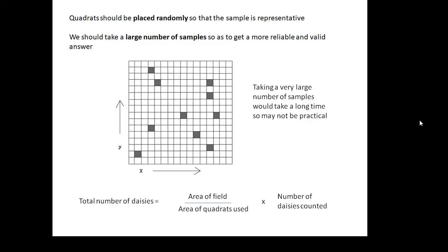To work out the total number of daisies, I've already said this. You've got the area of the field is the big area. The area of your quadrats is the small area. You divide the big area by the small area. And then multiply that by the number of daisies that you count. And that should give you an estimate for the total number of daisies.